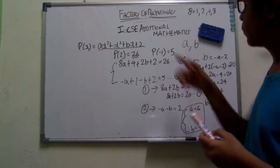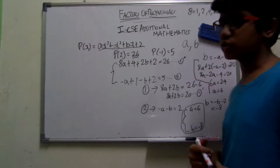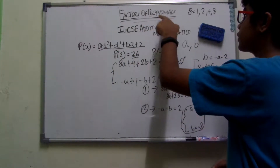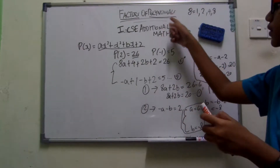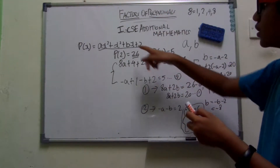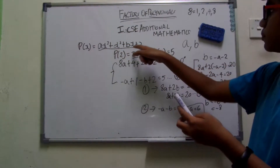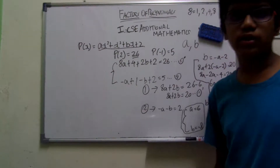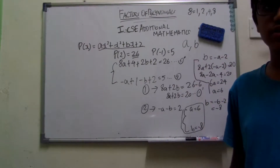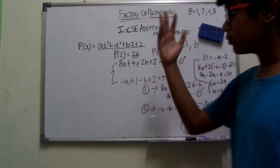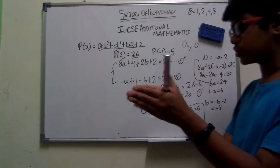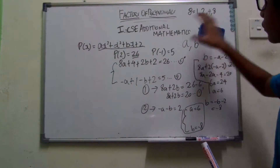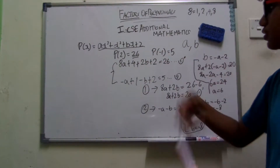Quick summary: a polynomial is any function, any equation that has a variety of exponents. For example, ax cubed plus x squared plus bx plus 2, or even ax to the power of 4 plus x cubed plus 2x squared plus 3x plus 1. It just has to have a range of exponents. That's a polynomial, and we are trying to find the factors of it and use that to solve the problems.